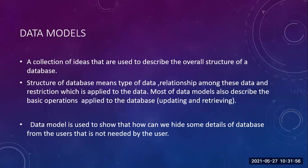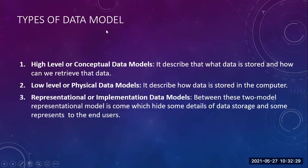So this is your data model. The definition of data model: it describes the overall structure of a database. If they ask you what is a data model, tell them it is the overall structure of the database — which includes the type of data, the relationships you are going to maintain with different tables, and the restrictions. This is the data model. Now there are three types of data models.